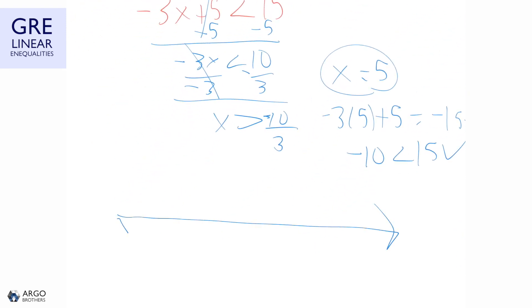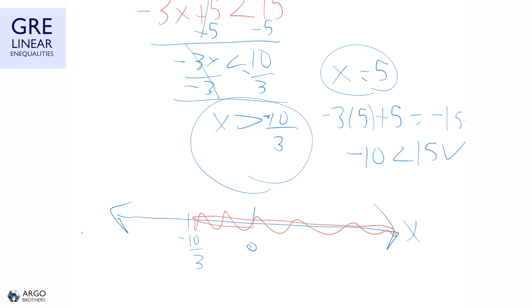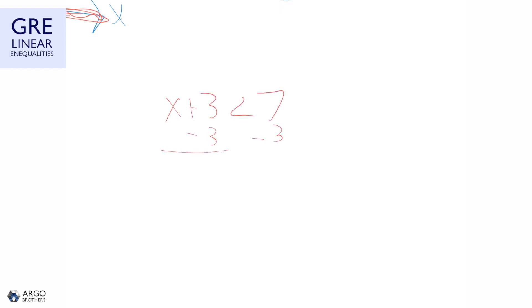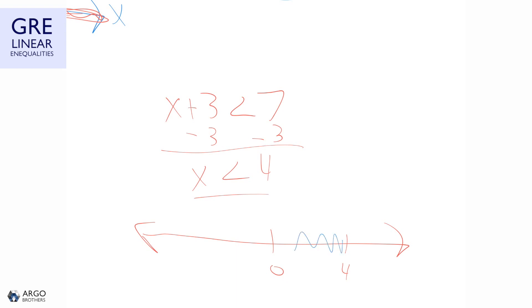We can graph solutions on a number line. For x greater than negative 10 over 3, we place that value on the number line and shade all points to the right. Let's try another example: x plus 3 is less than 7. Subtracting 3 gives x is less than 4. On the number line, we mark 0 and 4, then shade all points to the left of 4.